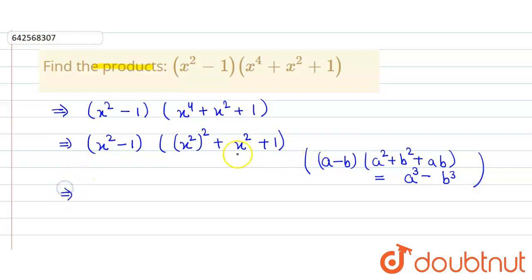By comparing this expression with this identity, we get this one is a and this one is b. So this is a minus b, that's a squared, that's b squared, and here is a into b. So we get a cubed minus b cubed.